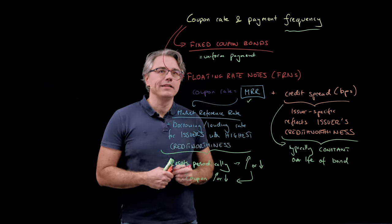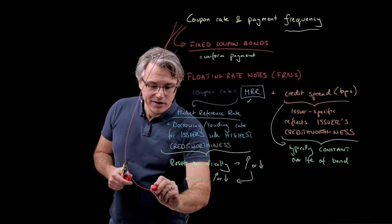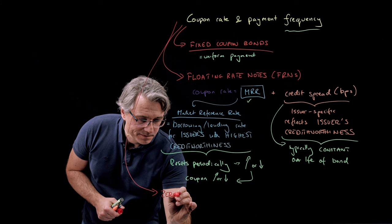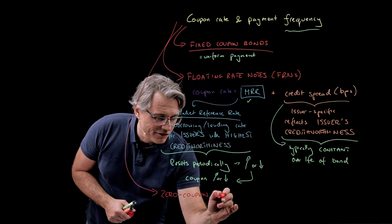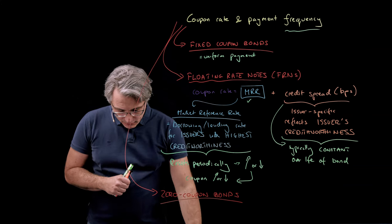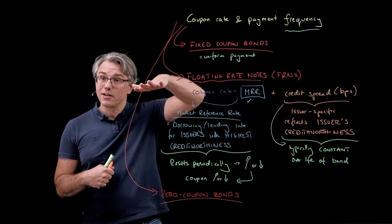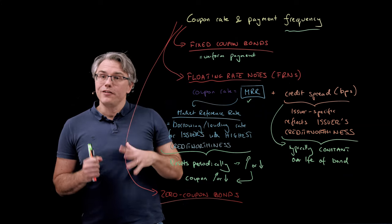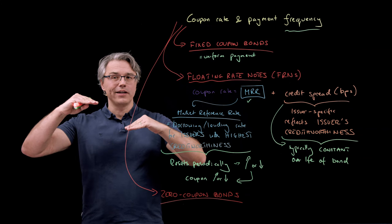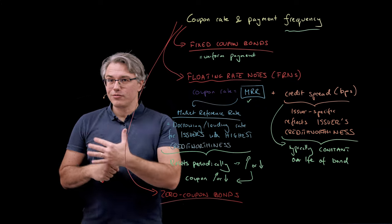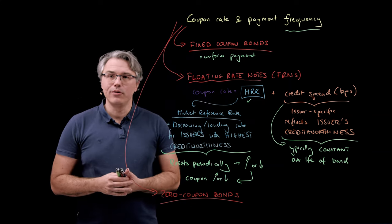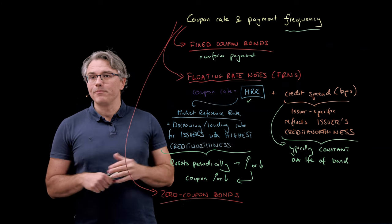We also have a third type of coupon rate — although you could say it's a specific example of a fixed coupon — namely a zero-coupon bond. Governments especially often issue bonds with a zero coupon, meaning they don't pay coupons at all, so there's no periodic interest payment. Such bonds are typically issued below their par value or face value. You buy them at a discount, and your reward for holding to maturity is receiving the full nominal value at the end.